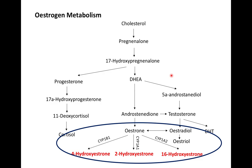Here is a simple diagram of how our hormones are synthesized — they're all synthesized from cholesterol, so we need cholesterol. The first step is the conversion of cholesterol into pregnenolone, then into 17-hydroxypregnenolone, which is the precursor for all of our steroid hormones.